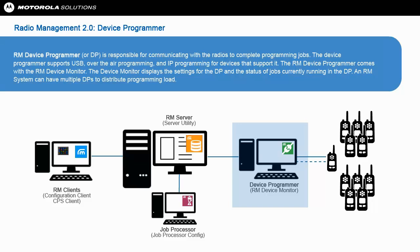RM Device Programmer is responsible for communicating with the radios to complete programming jobs. The Device Programmer supports USB, over-the-air programming, and IP programming for devices that support it. The RM Device Programmer comes with the RM Device Monitor, which displays the settings for the Device Programmer and the status of jobs currently running in it.